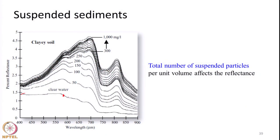When soil particles or the concentration of such soil particles increases, the reflectance will increase in almost all wavelengths, as shown in this particular slide. Here you can see the bottom-most curve represents a clean, clear water body. As the concentration of suspended particles increases, the reflectance in all wavelengths will basically increase — even in NIR we will get some high reflectance because of the presence of such soil particles. Also, as the concentration increases, the wavelength at which peak reflectance occurs actually shifts towards longer wavelengths.